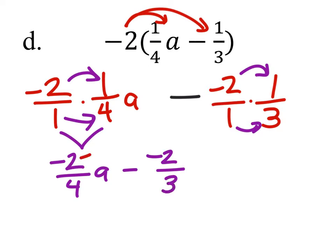We can simplify this further though, so we can divide both of these by 2. So that would give us a negative 1 half A. And we could say that's a plus, by the way, because it's minus a negative. So plus 2 thirds.